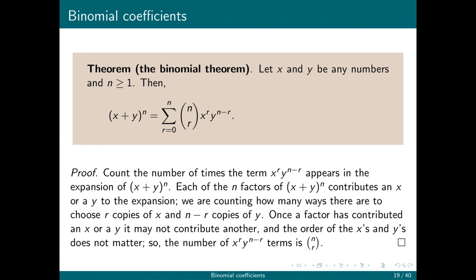So this theorem is called the binomial theorem. Let x and y be any numbers, including complex numbers if you know what those are, and let n be a positive integer. Then x plus y to the nth power is the sum of n choose r times x to the r times y to the n minus r. And if that looks a little complicated, basically the only thing I'm saying is that the power on x is going up, the power on y is going down, and the coefficient is always n choose r.